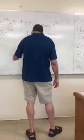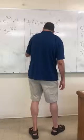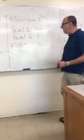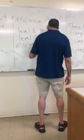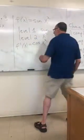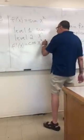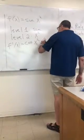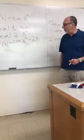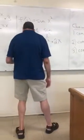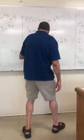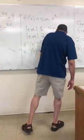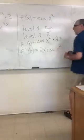So now we get f prime of x equal to the derivative of level 1. The derivative of sine of an angle is cosine of the angle, so we get cosine of x squared, times the derivative of level 2. The derivative of x squared is 2x. So, rearranging the order of multiplication, we get 2x cosine of x squared.